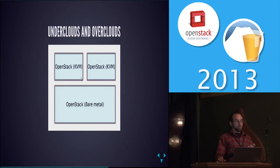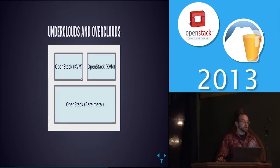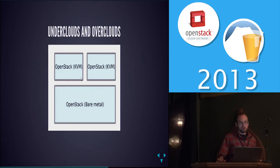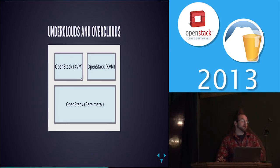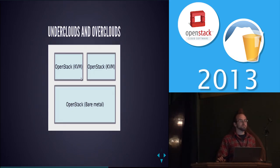Depending on how you set things up, right now we have the two core machines in the under cloud running everything, and that will change in the future as we want things to scale out better. You can have as many images as you want — we bake them beforehand and once baked they're set. Saying you're using KVM or bare metal is a fairly small change in the config, so we hope to actually use the same Nova compute images for both the top and bottom layers as much as possible.